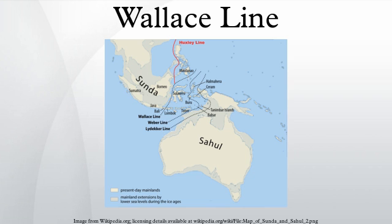Antonio Pigafetta had recorded the biological contrasts between the Philippines and the Maluku Islands in 1521, during the continuation of the voyage of Ferdinand Magellan, after Magellan had been killed on Mactan. Moreover, as noted by Wallace himself, observations on fauna differences between the two regions had already been made earlier by George Windsor Earl.